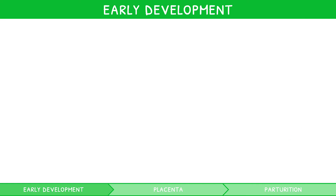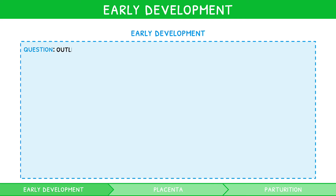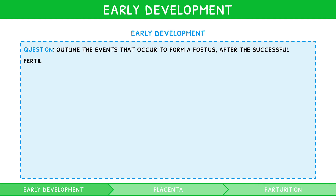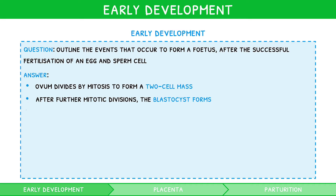Let's review the stages of early development with a common exam question: Outline the events that occur to form a fetus after the successful fertilization of an egg and sperm cell. Remembering to include 8 phrases for an 8-marker question, we could say: The ovum divides by mitosis to form a 2-cell mass. After further division by mitosis, a hollow ball called a blastocyst forms. By 1 week post-fertilization, there are 125 cells present.